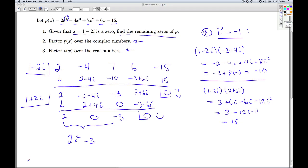So I've got my polynomial P(x), and I've broken it down to (x - (1 - 2i)) times (x - (1 + 2i)) times (2x² - 3). If I'm looking for the zeros, I'm setting this equal to 0. I'll get the 1 - 2i, I'll get the 1 + 2i. Then I set this equal to 0.